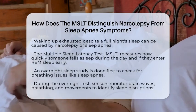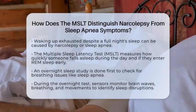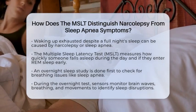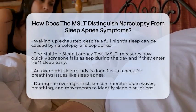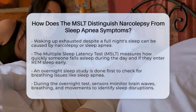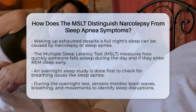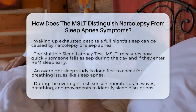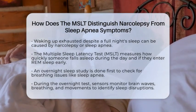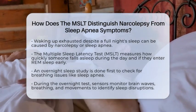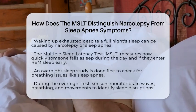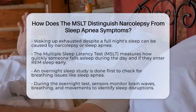The way doctors tell the difference is through a special test called the Multiple Sleep Latency Test. This test measures how quickly you fall asleep during the day and whether you enter REM sleep, which is the deep sleep where dreams happen. It is done after an overnight sleep study that checks for breathing problems like sleep apnea.